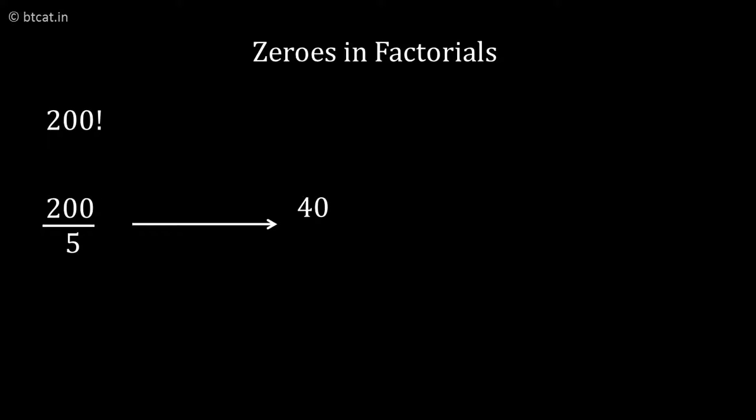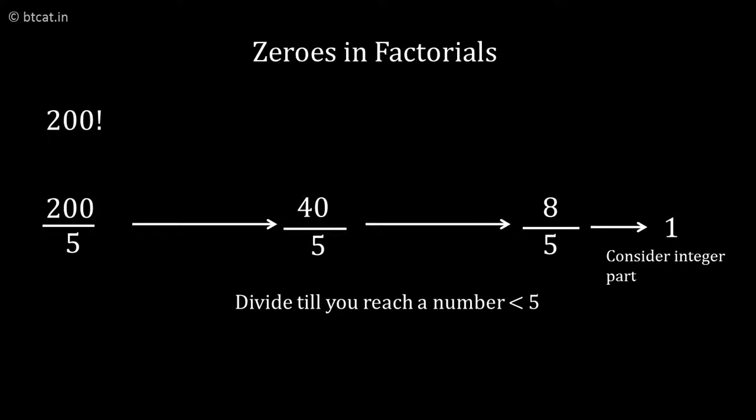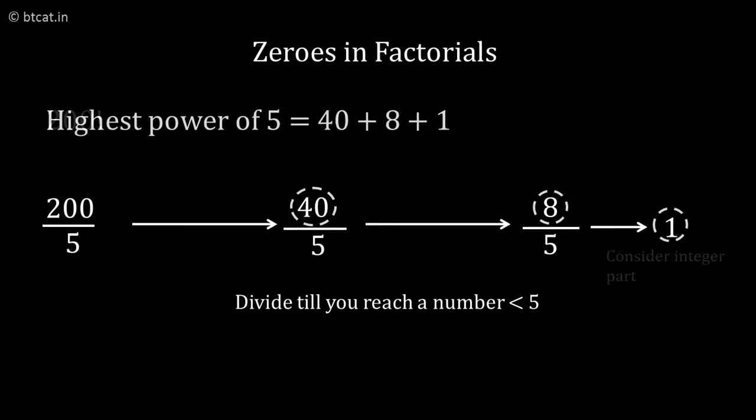So, how many zeros are there in 200 factorial? Again make a line. Divide 200 by 5 we get 40, again divide 40 by 5 we get 8, again divide 8 by 5 we get 1. Take the integer part, don't take anything in decimal. Now add all of them. So 40 plus 8 plus 1 will give you 49. Therefore, there are 49 zeros in 200 factorial.